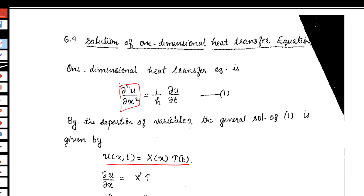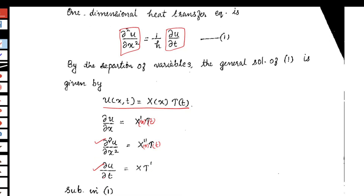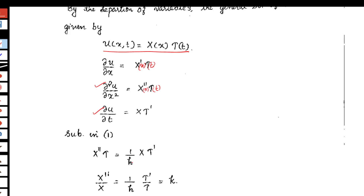We require ∂²u/∂x² to substitute in equation 1. First, let us evaluate ∂u/∂x. T(t) is constant, so the derivative of X(x) with respect to x can be denoted as X'. Differentiating once again with respect to x, we get X''(x)·T(t). We also require ∂u/∂t, so differentiating u with respect to t gives X·T'. Substituting into equation 1, we get X''·T = (1/h)·X·T', which simplifies to X''/X = (1/h)·T'/T.